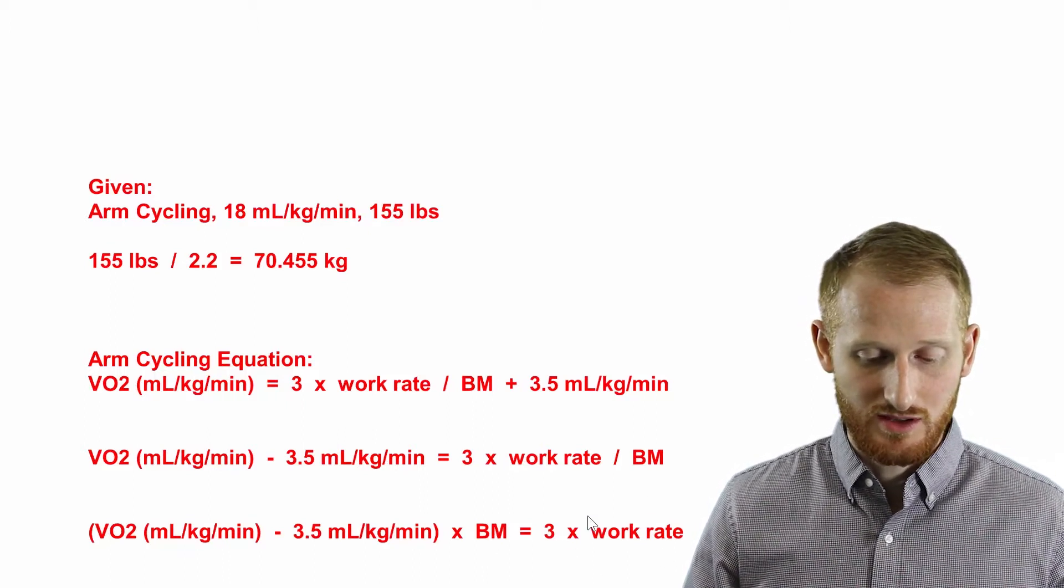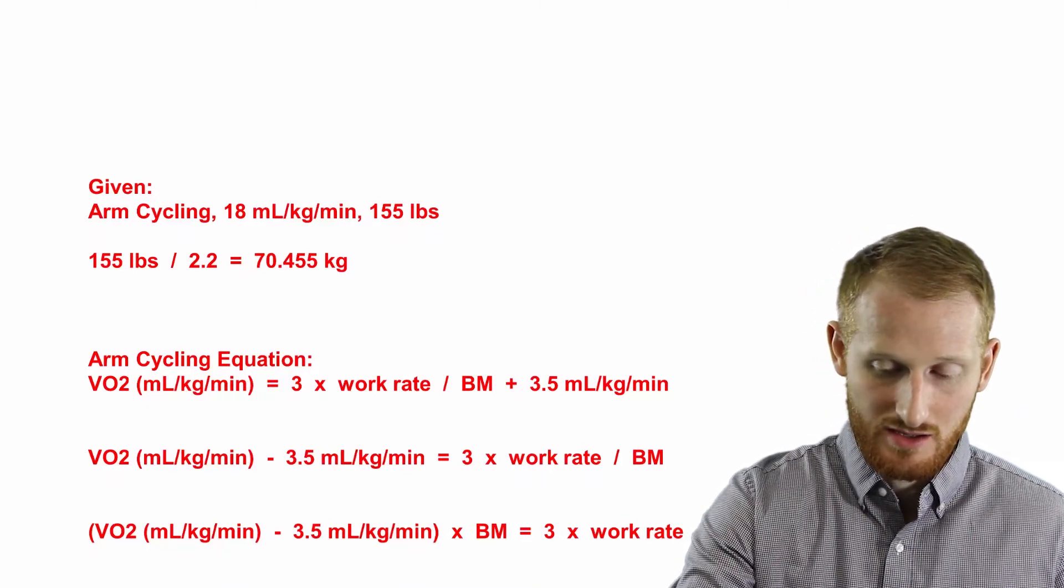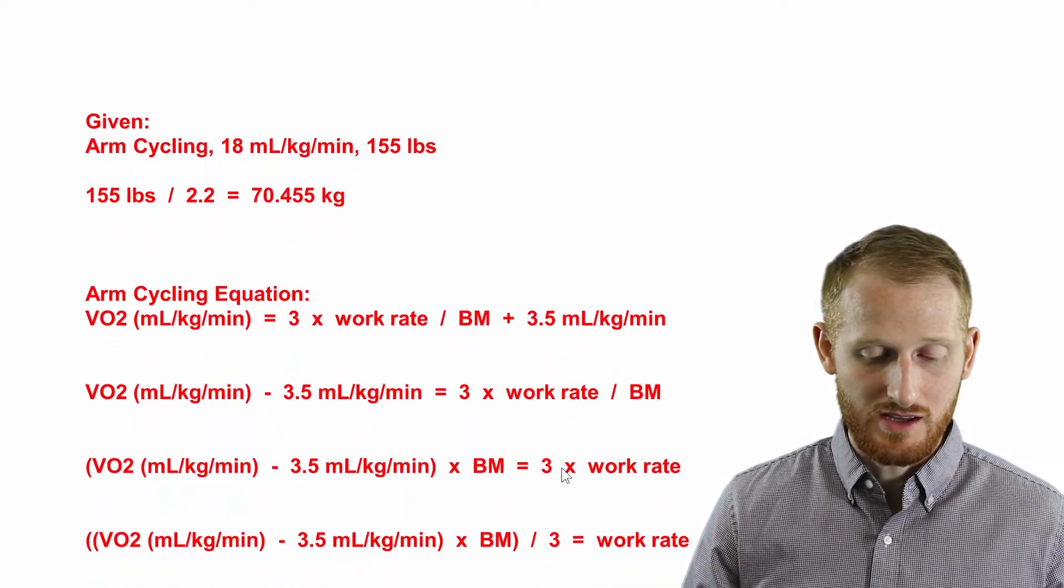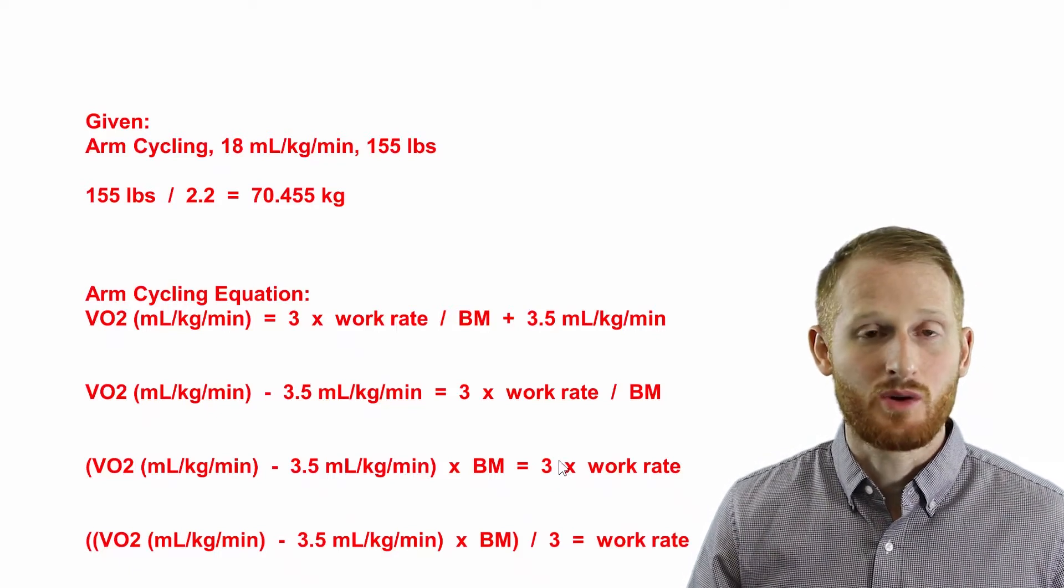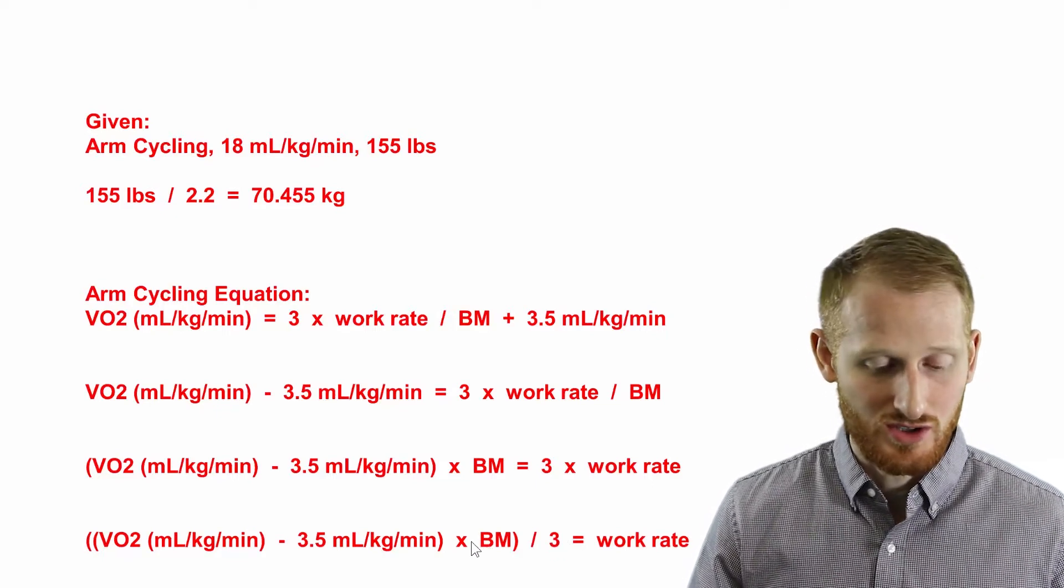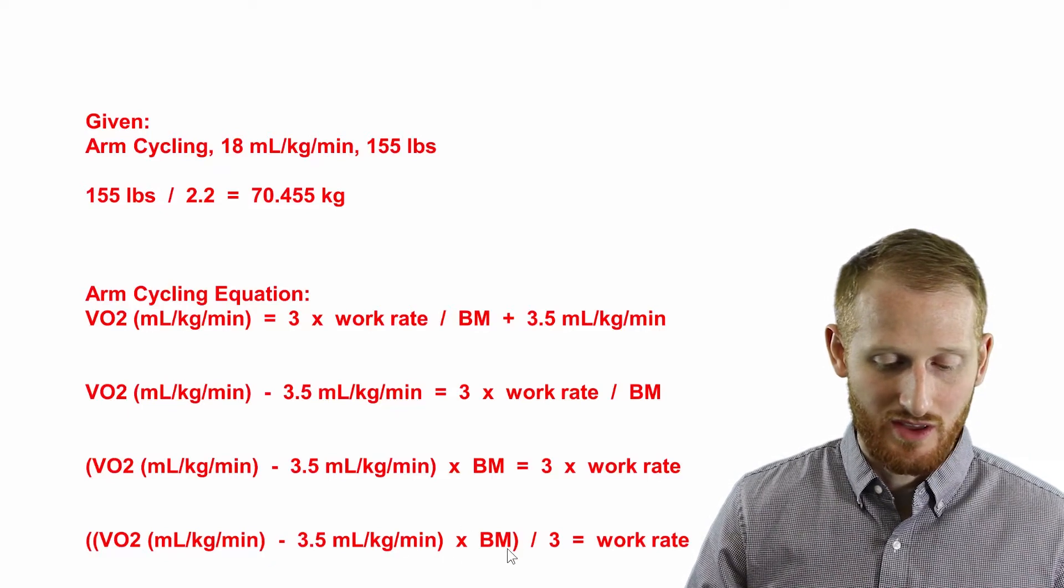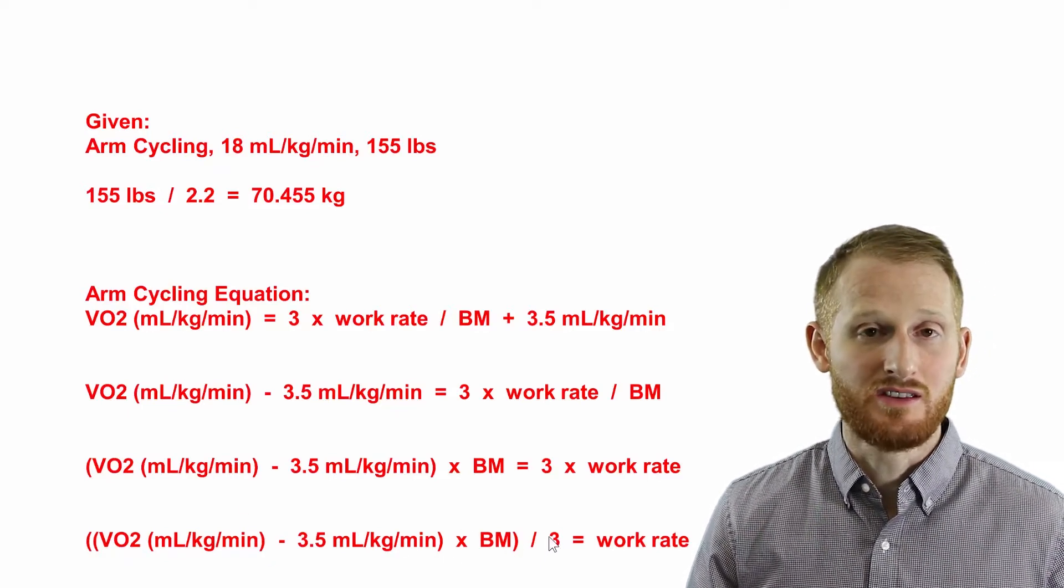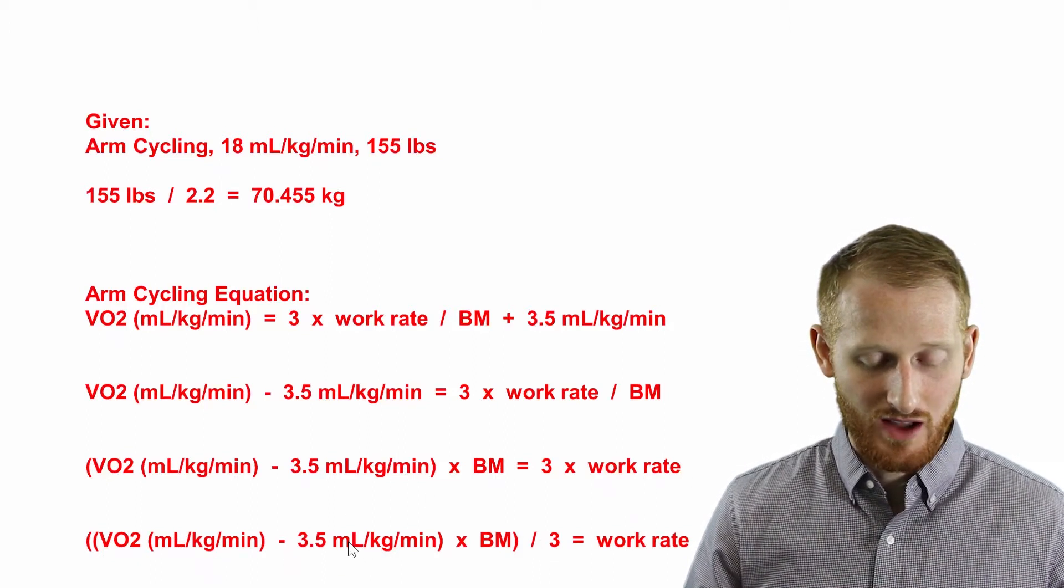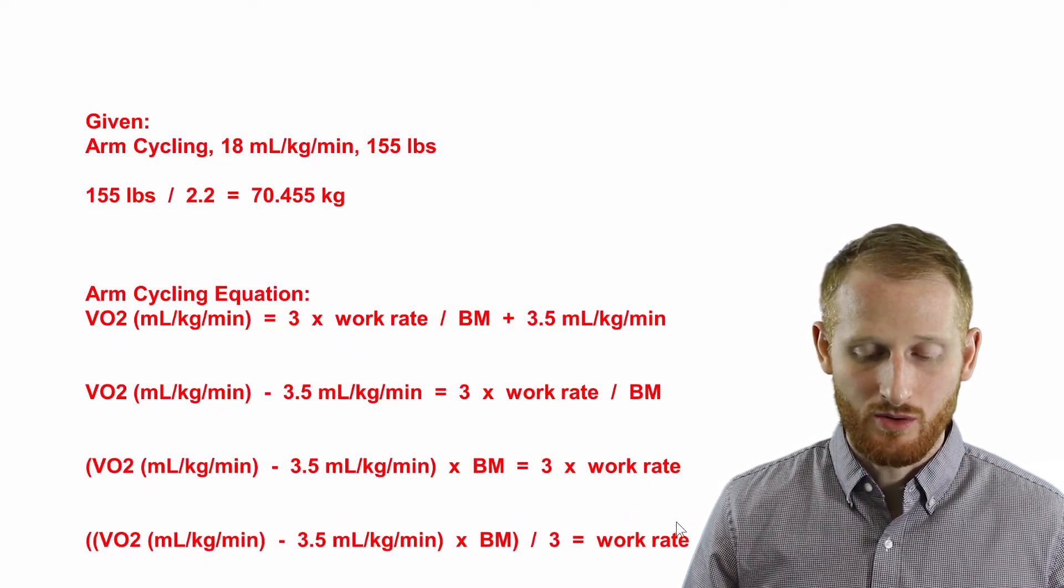We still have two different values on the right side of the equation. Again, we need to isolate work rate. So let's go one more step here and we're going to divide the 3 from both sides of the equation to cancel it out on this side and end up with divide by 3 on the left side of this equation. And notice that each time I did this I put a set of parentheses in here to make sure that I did each of these calculations in the correct order. So first you're going to have to do the VO2 minus 3.5, then you would have to multiply by the body mass, and then divide by 3 in order to get the work rate.